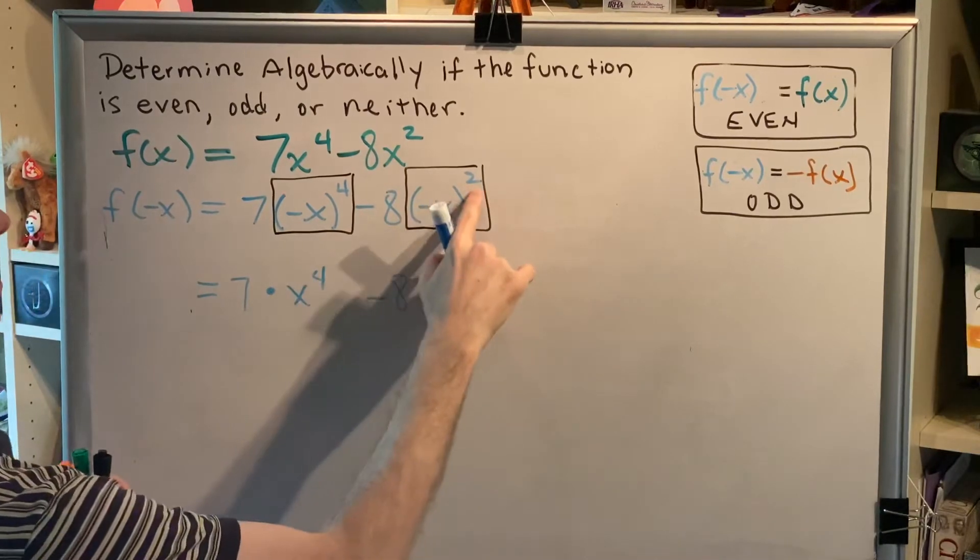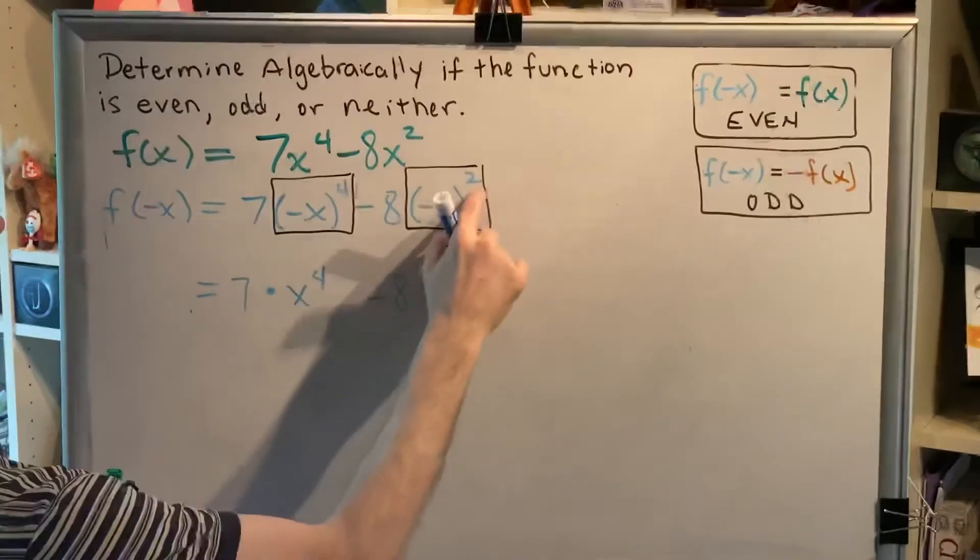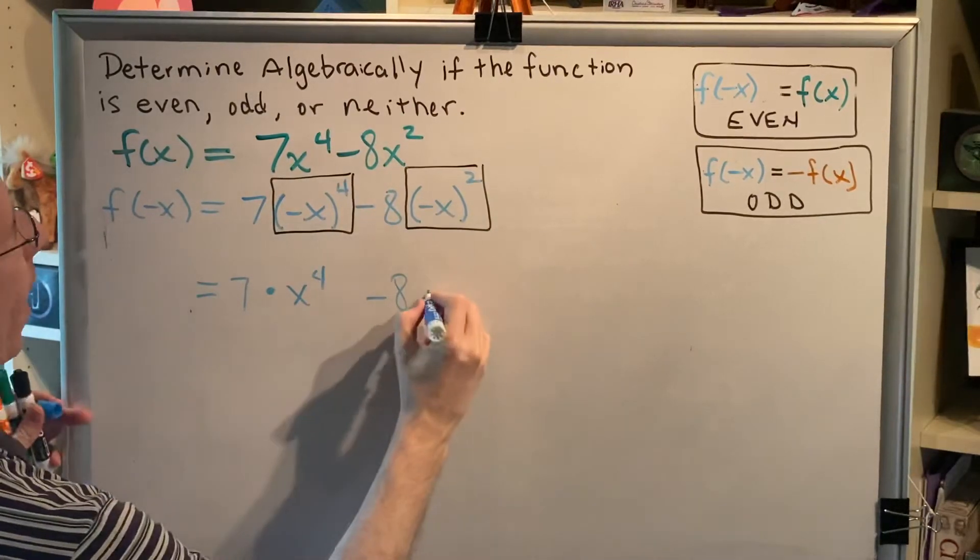In this box we have a negative raised to an even power, which is a positive. And x raised to the second power, which is x squared. Positive x squared.